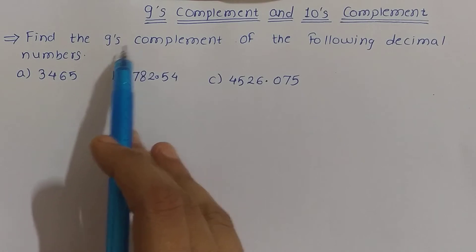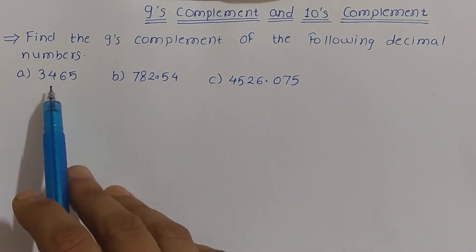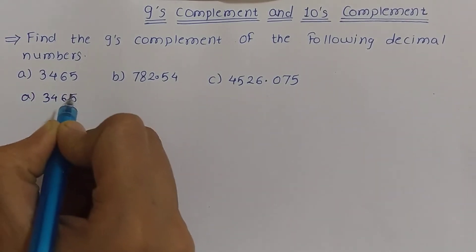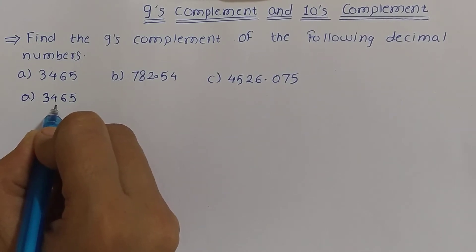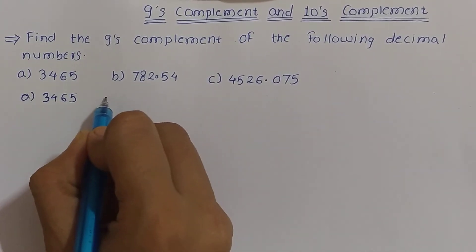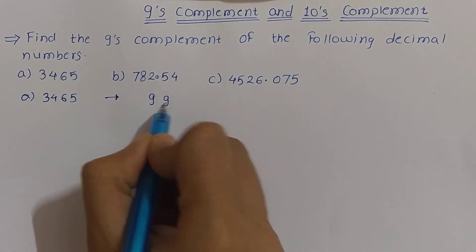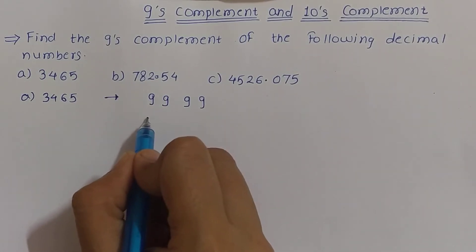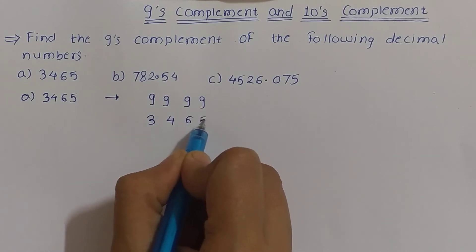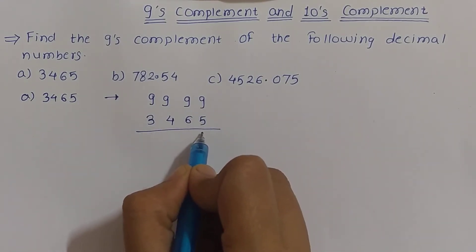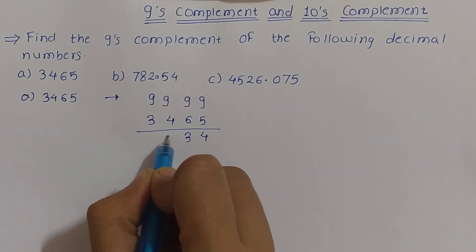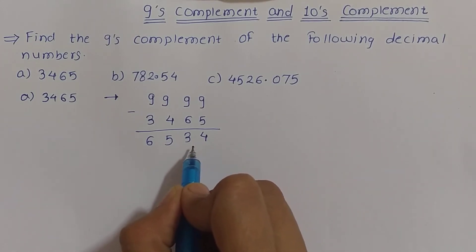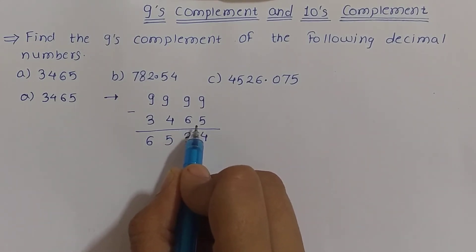Find the 9's complement of the following decimal numbers. The first number is 3465. To get the 9's complement, we will subtract each digit of this number from 9. There are 4 digits, so we take 9999 and subtract: 9-5 is 4, 9-6 is 3, 9-4 is 5, 9-3 is 6. So 6534 is the 9's complement of the decimal number 3465.